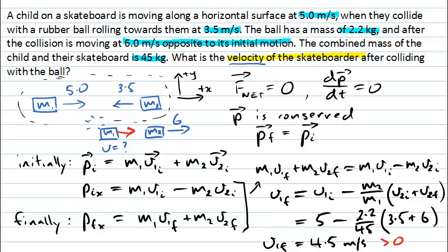If this number had come out to be negative, then that would mean that the skateboarder was moving in the opposite direction. Is there any way we could understand this final velocity of the skateboarder being negative?